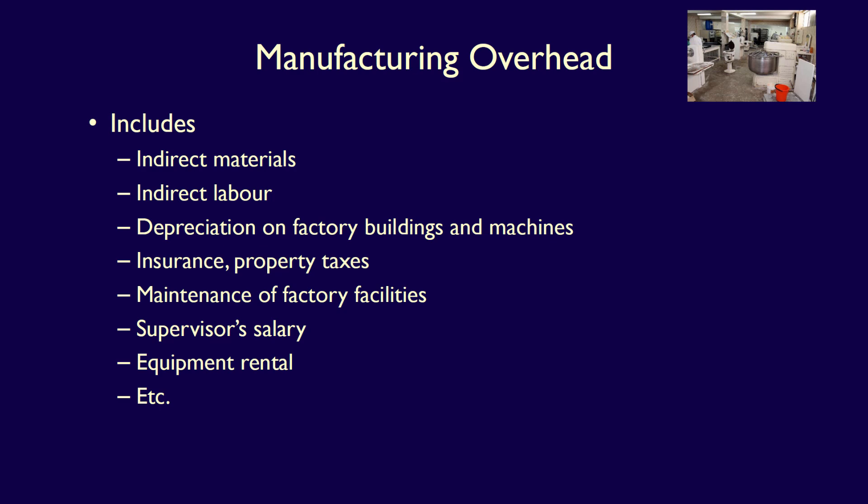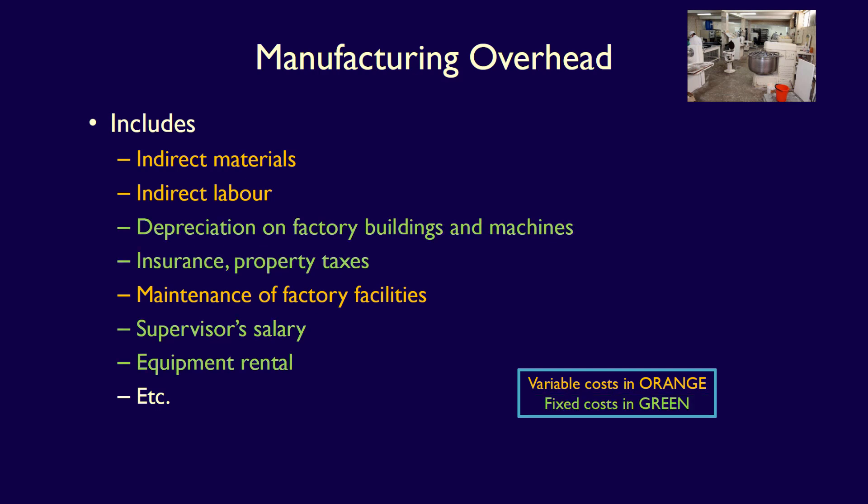Manufacturing overhead can be divided into variable and fixed costs. Indirect materials, indirect labour, and maintenance for the factory facilities are all variable in nature because these costs change with the level of activity. If production increases, these costs increase, and if production reduces, the costs also reduce. Other overhead costs are fixed: depreciation on the factory building and machines, insurance and property taxes, supervisor salary, and equipment rental. Regardless of the level of activity, these are likely to be fixed.